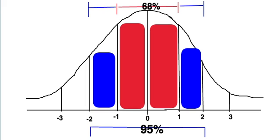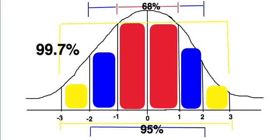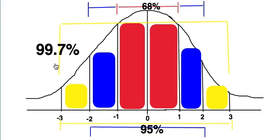The final part of this rule — 68, 95, 99.7 — is that the last group of people, use a third color here, will score in the next standard deviation. Almost 100% of the scores will fall within the bell curve: 99.7%. So 68% fall within the first standard deviation, 95% score within the first two standard deviations above and below, and 99.7% of people score within the first three standard deviations above and below the mean.